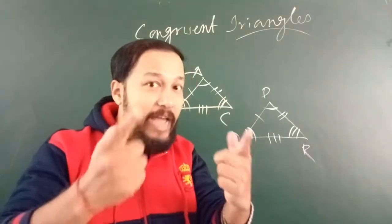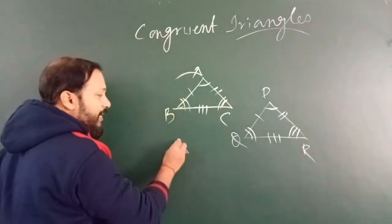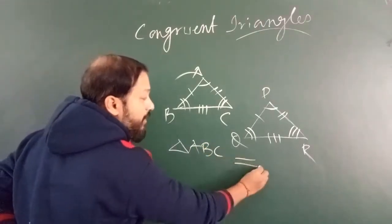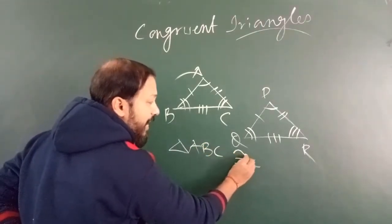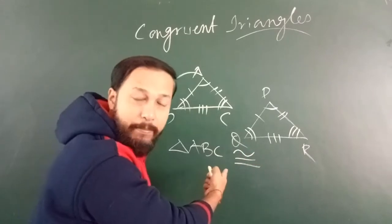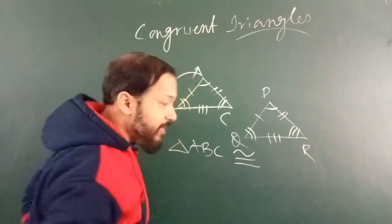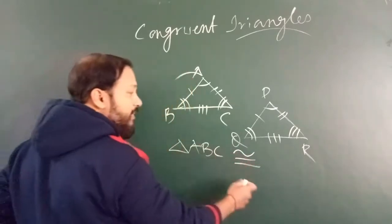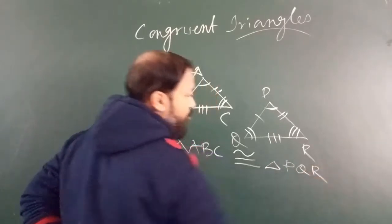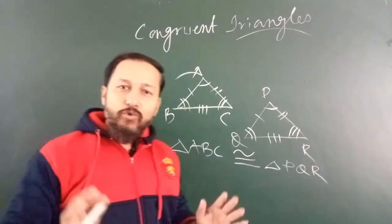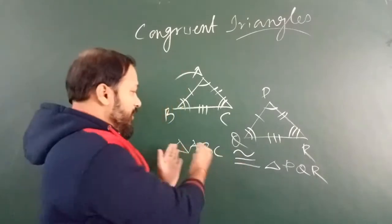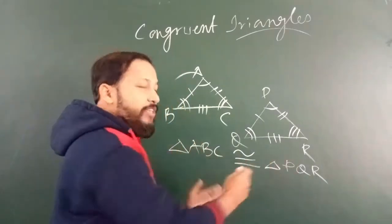In that case I can write triangle ABC congruent to triangle PQR. This is the symbol of congruency. So when two triangles are congruent, we can write it in this way.